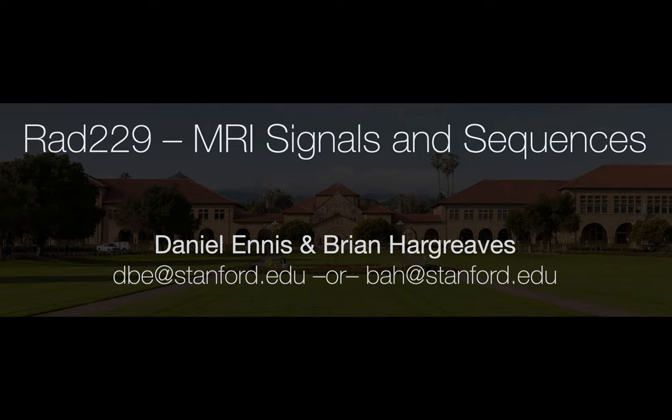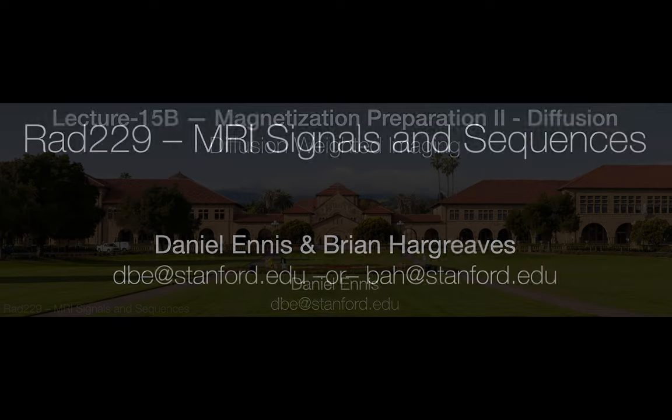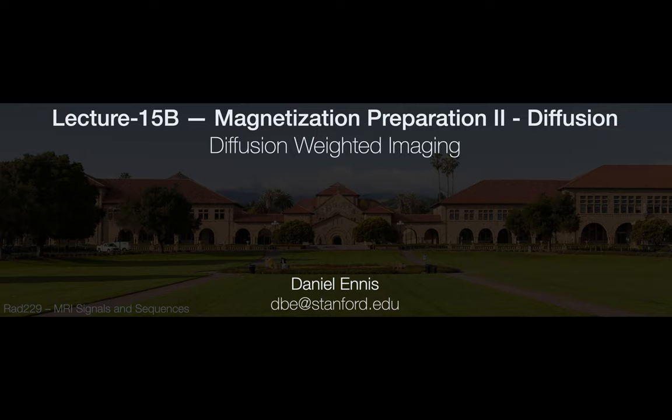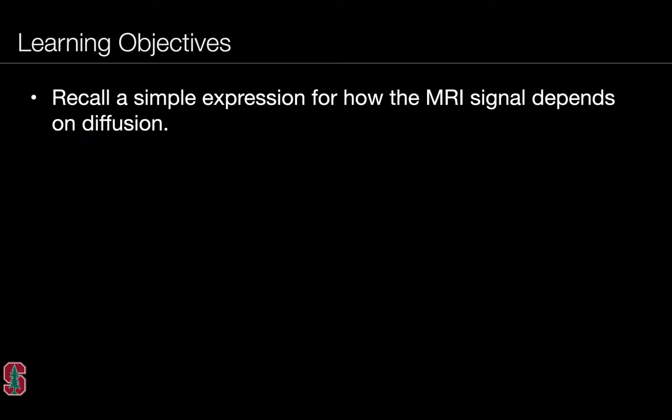This lecture is part of a series of lectures for RAD229, MRI Signals and Sequences, offered in the Department of Radiology at Stanford University. The 15th lecture, Magnetization and Preparation, Part 2, focuses on diffusion and is broken down into three parts. Lecture 15b covers diffusion-weighted imaging.